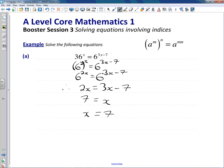So I suppose we could check that. Going back to the original, we've got 36 raised to the x—we now think that x is 7—so what it's saying is that 36 to the 7 must be equal to 6 raised to the, or 3 times 7 minus 7, which is 14.